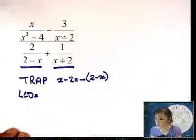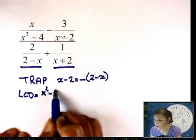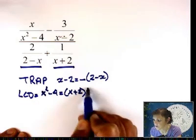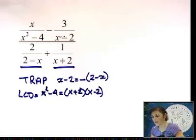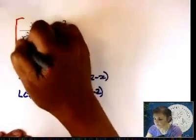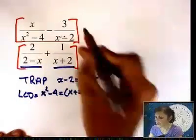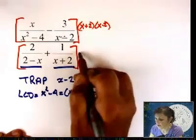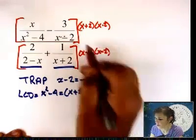So multiply them out. Your LCD is x square minus 4. Which is the same as x plus 2, x minus 2. All right. This is what you do. You put your brackets. Top. Bottom. Let's do x plus 2, x minus 2. x plus 2, x minus 2. I'm going to do a little faster.